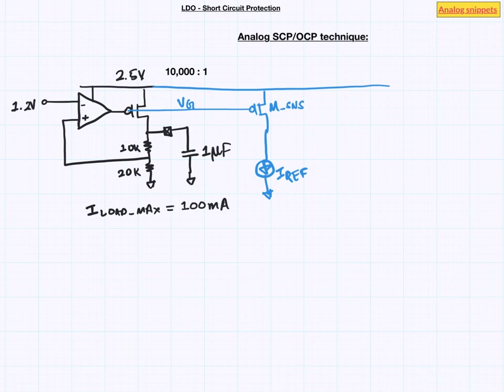In normal operating condition we would like current in MSense to be smaller than IRF. So this voltage would be low. On the other hand in an overcurrent condition the current in MSense exceeds the IRF and this voltage tends to go high. And when that happens we would like to clamp the VG so that the current in power PMOS does not go above a certain value.